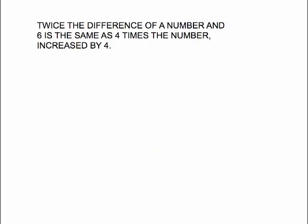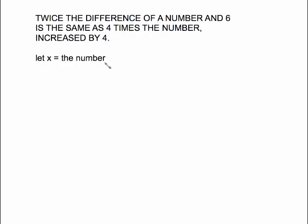Alright, let's translate this one. Twice the difference of a number and 6 is the same as 4 times the number increased by 4. Sounds a little more complicated, but let's start out like we did before. Let x equal the number. Keep in mind the 'IS' is going to separate this into two parts.